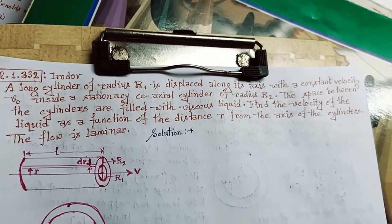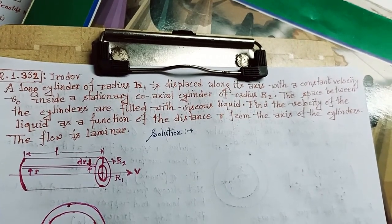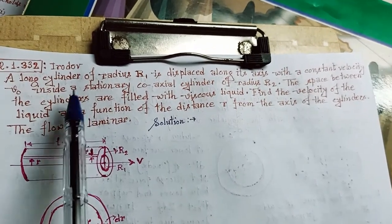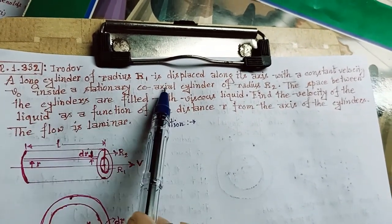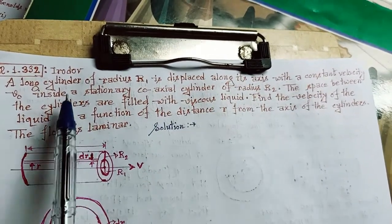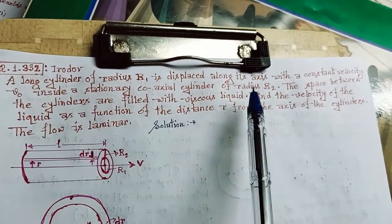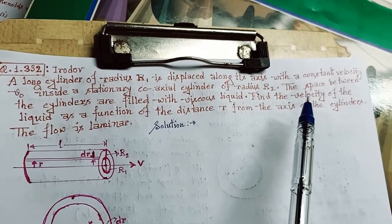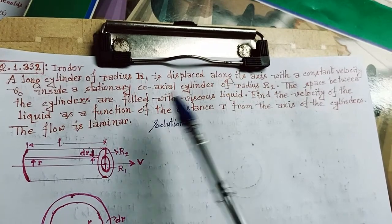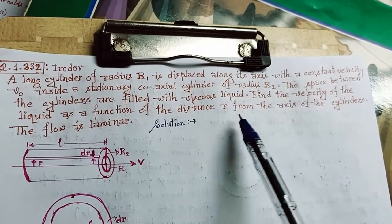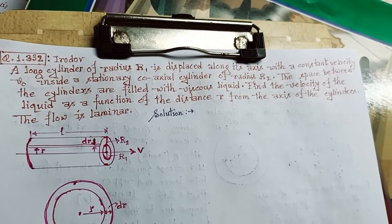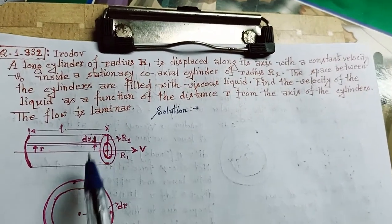Here is question number 1.332 from hydrodynamic fluid mechanics. In this question, it is given that a long cylinder of radius r1 is displaced along its axis with constant velocity v0 inside a stationary coaxial cylinder of radius r2. The space between the cylinders is filled with viscous liquid. Find the viscosity of the liquid as a function of the distance r from the axis of the cylinders. The flow is laminar.